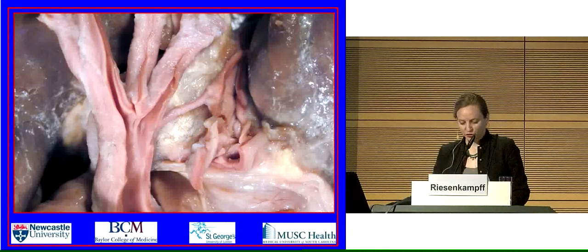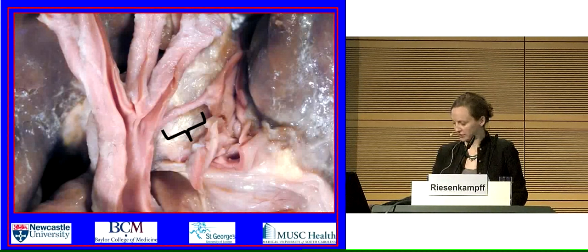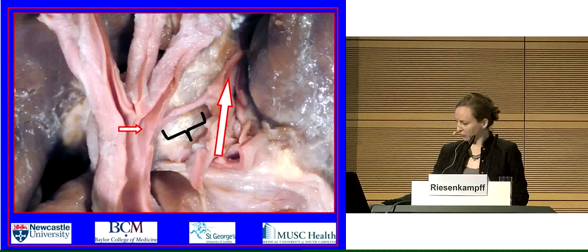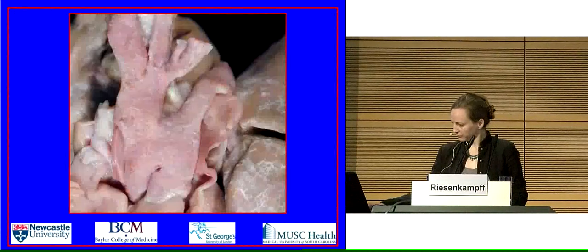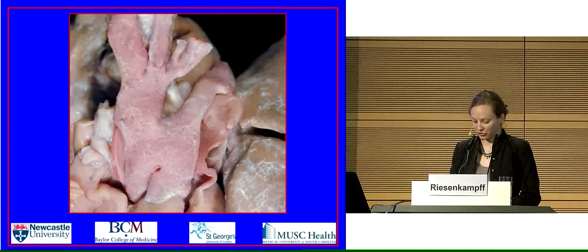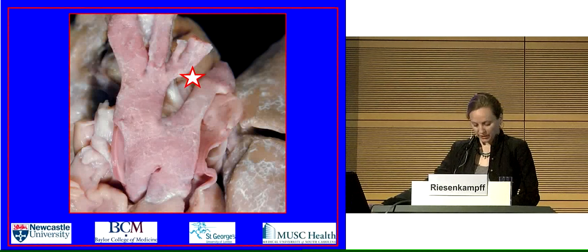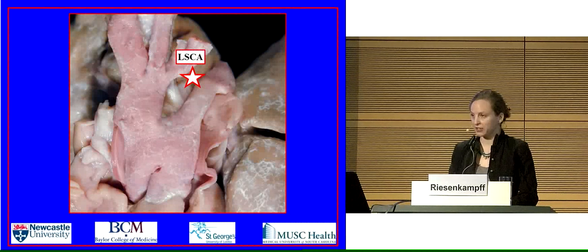This image seen from the front shows atresia of the isthmus. This bracket illustrates the strand of atratic artery representing the isthmus. This arrow points to the dimple at the proximal end of the atratic segment. This second arrow points to the patent arterial duct, which feeds the distal part of the circulation. Going further, we see progression of the spectrum from atresia at the isthmus to interruption. This star shows interruption at the site where previously there had been an atratic strand. Here we have the left subclavian artery, so the interruption is at the isthmus — the so-called type A interruption.